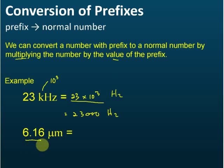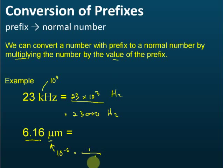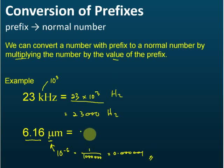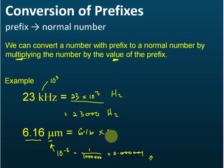Another example: 6.16 micrometers. Micro is equal to 10 to the power of negative 6, which is 1 divided by 1 million, or 0.000001. So if you want to change 6.16 micrometers to meters, we write 6.16 multiplied by the value of the prefix, which is 10 to the power of negative 6.